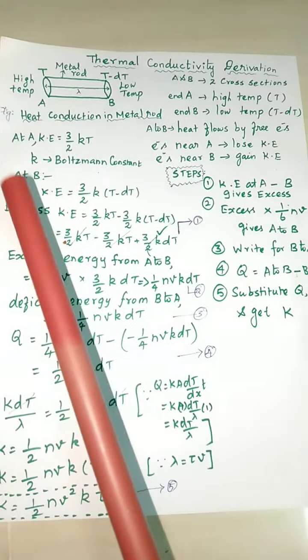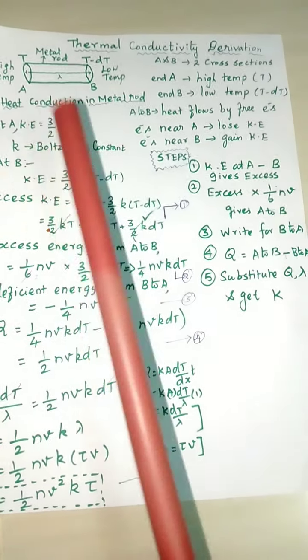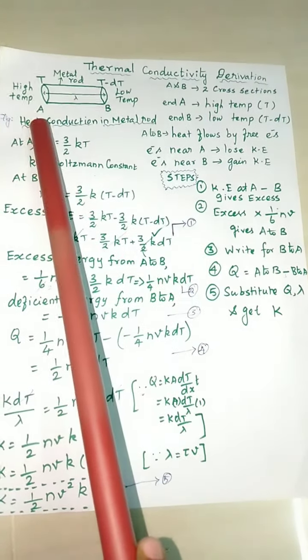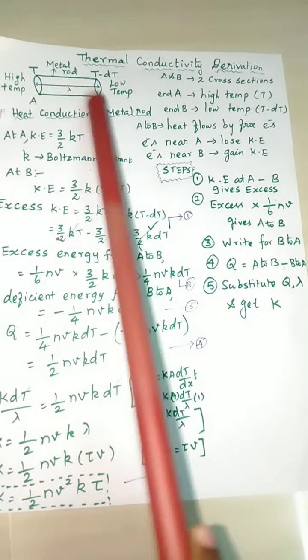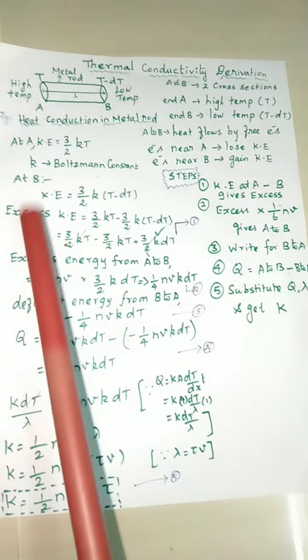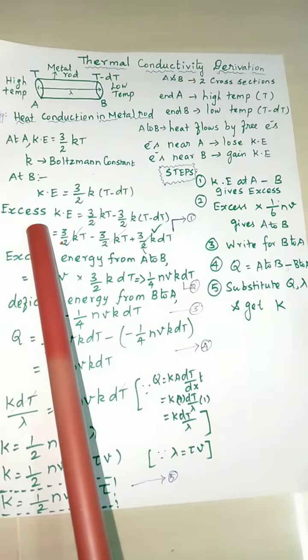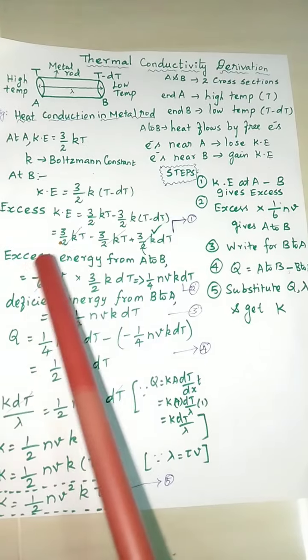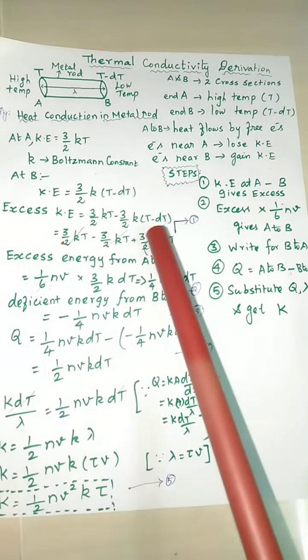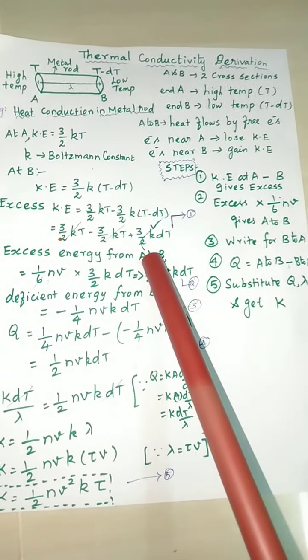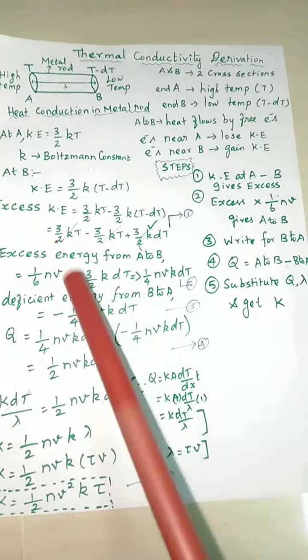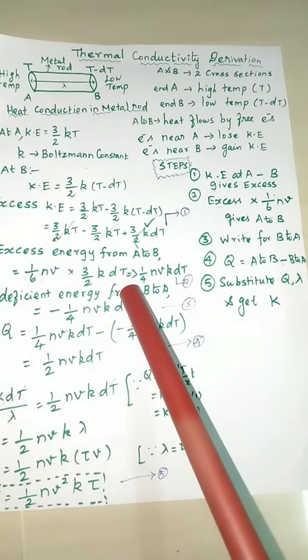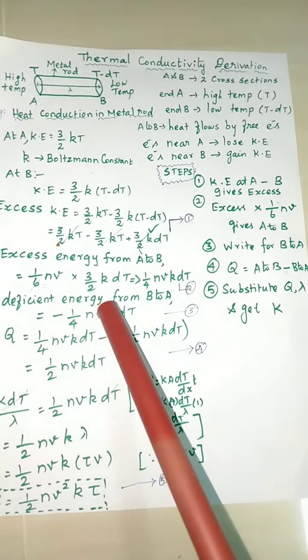Kinetic energy at A and B. A minus B - this is excess energy. A to B, we will multiply the excess energy by 1 by 6. In the second one, B to A.